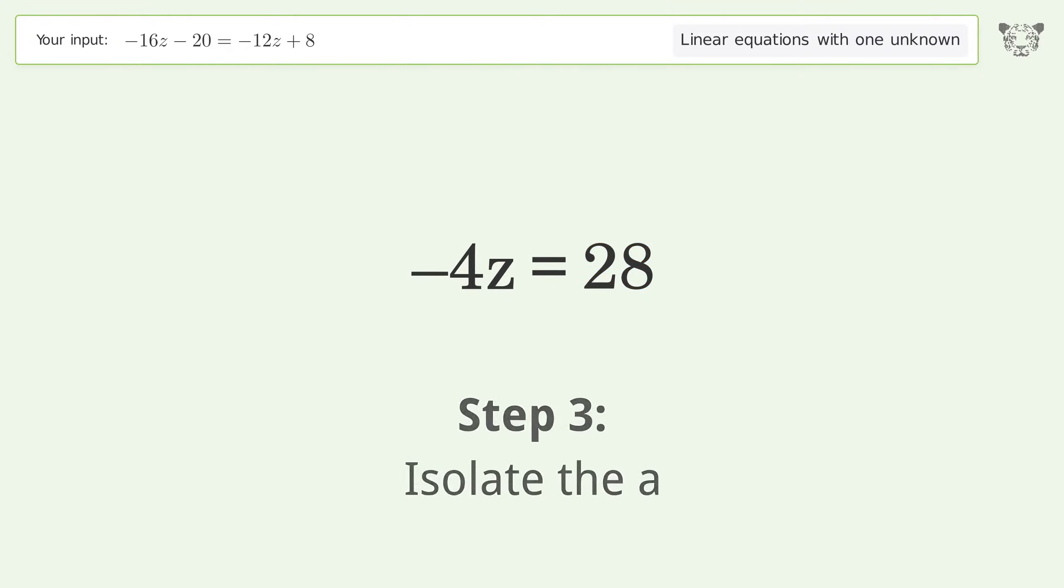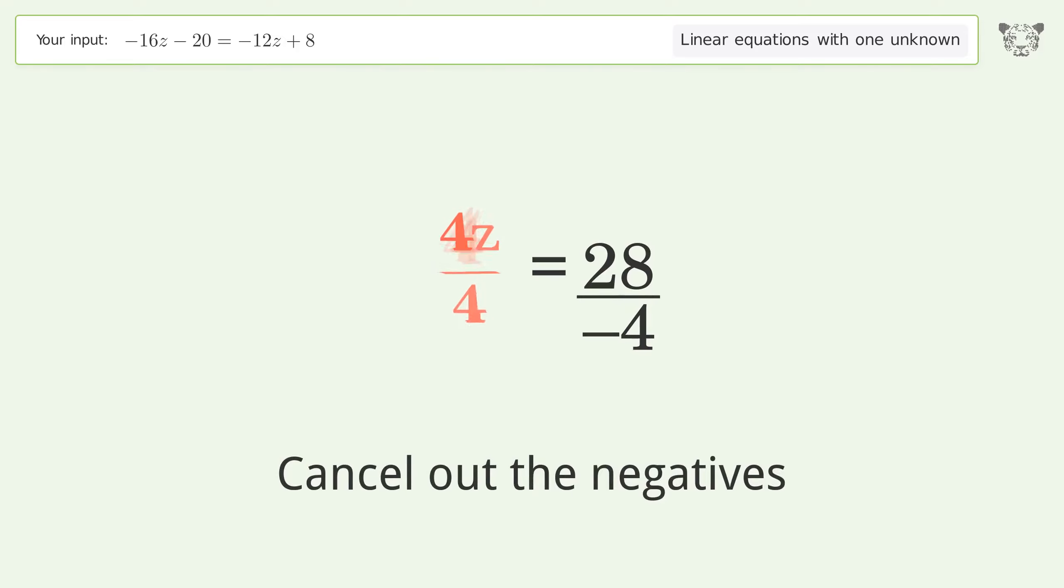Isolate the z. Divide both sides by negative 4. Cancel out the negatives. Simplify the fraction.